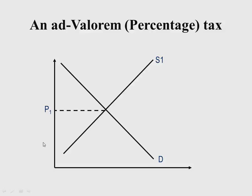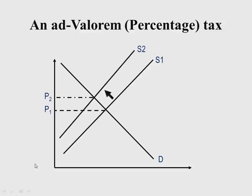Imposing an ad valorem tax shifts the supply curve leftward and upward. We see that price has gone up from P1 to P2 and equilibrium quantity has reduced from Q1 to Q2. So quantity has reduced, price has increased, and the equilibrium point has moved up.